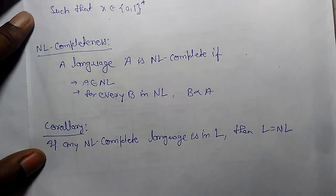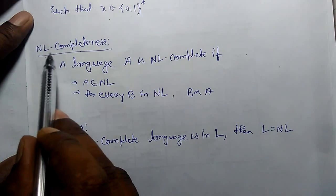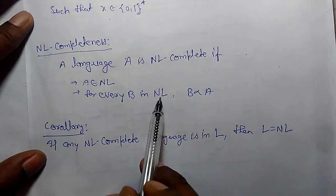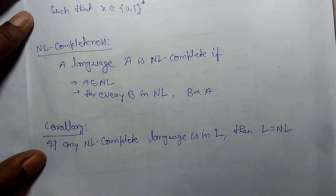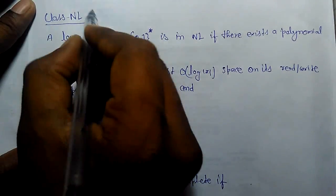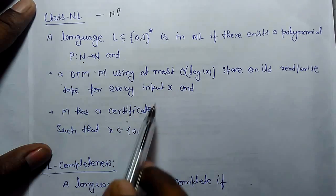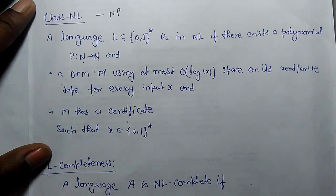In NP-completeness, a language A is NL-complete if A belongs to NL—similar to NP-complete we can understand NL-complete. For every B in NL, B is reducible to A. Class NL is similar to NP where there is a certifier that will certify big O of log(|x|) space on its read/write tape for every input x.